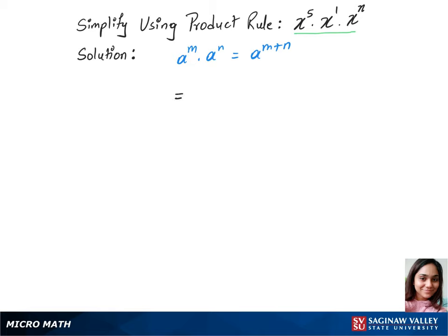We put x and add up all the powers, which is 5 plus 1 plus n. This gives us x to the power 6 plus n. So that's our answer.